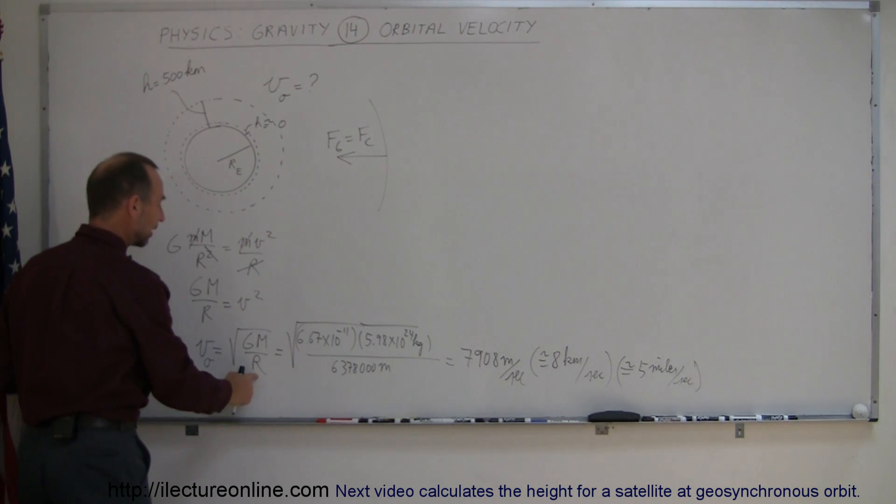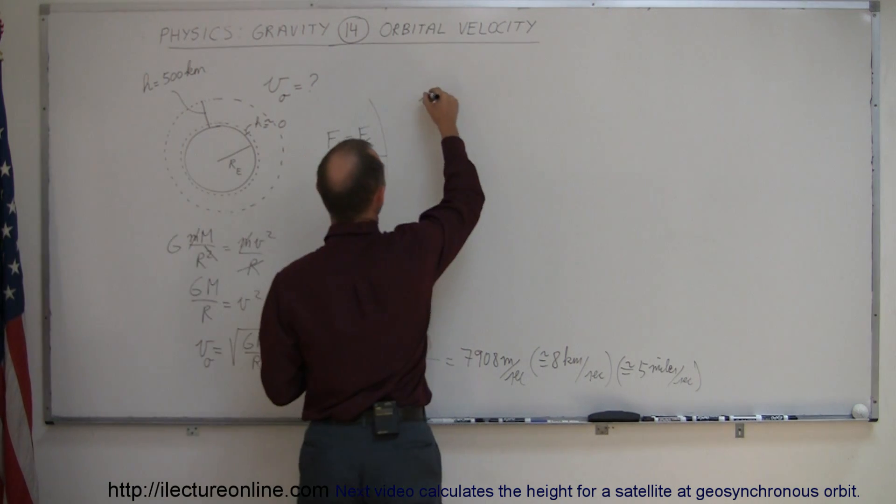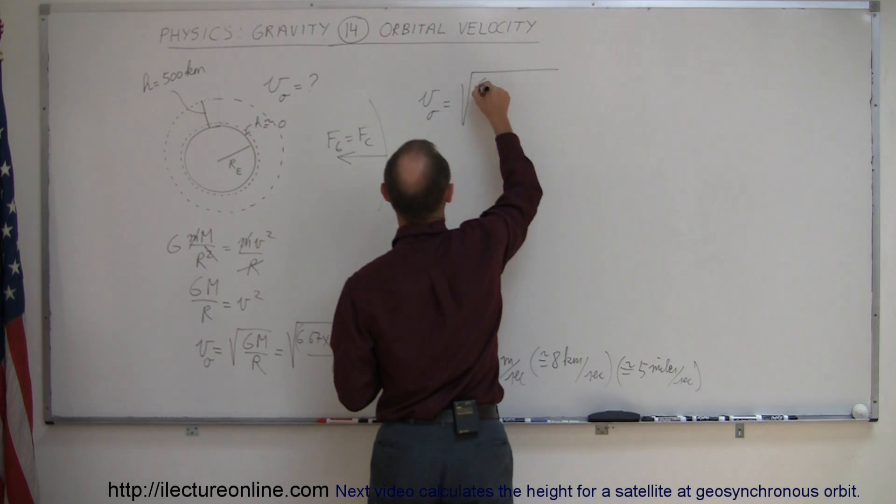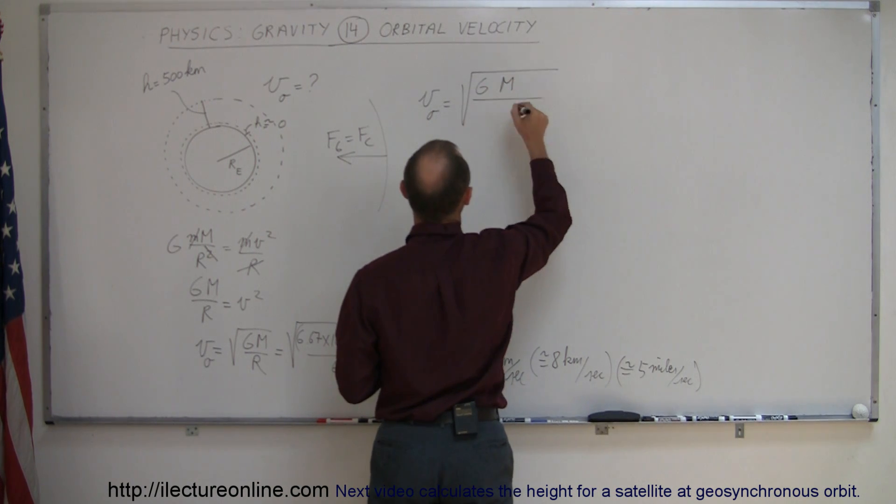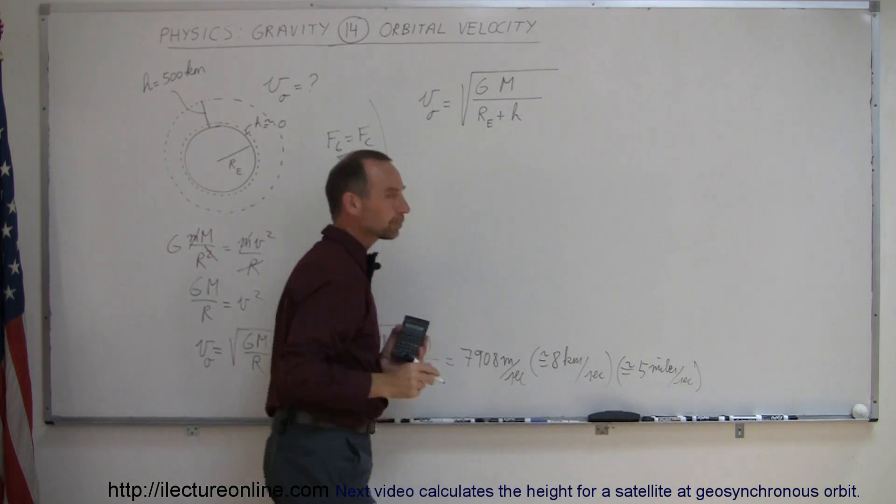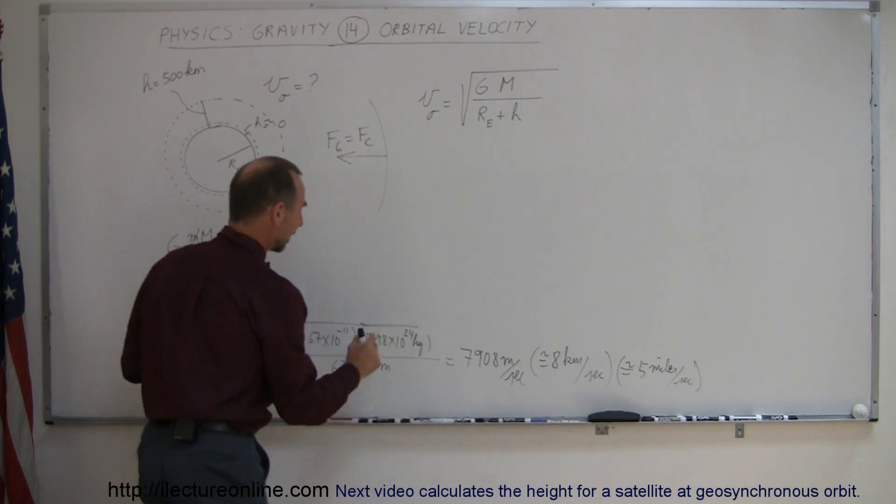The radius then becomes the radius of the Earth plus the height of the orbit. So the orbital velocity would be equal to the square root of g times m, that's still the same, divided by the radius of the Earth plus the height of the orbit. Plugging that number in, it will be everything the same except we're going to add the height of the orbit.